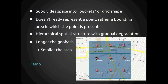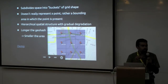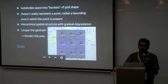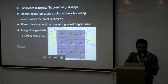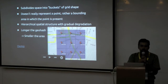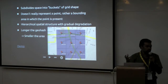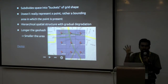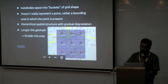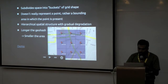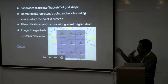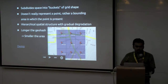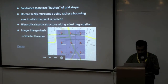It subdivides space into buckets of grid shape, rectangular in shape. It doesn't mean you can reach a point level — a particular given point like Bangalore being TDR1 just means that lat-long is within that boundary. It's a hierarchical structure, and as I already told, the longer the GeoHash, the smaller and higher precision the area.